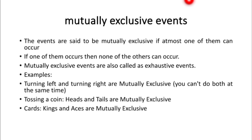Mutually exclusive events are also called exhaustive events. For example, turning left and turning right are mutually exclusive because either you can turn left or you can turn right — you can't do both at the same time. Either one event can occur, not both events at the same time.